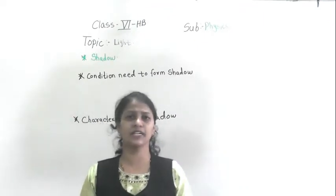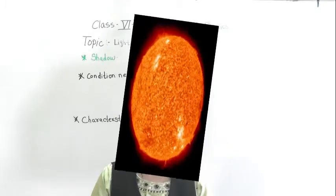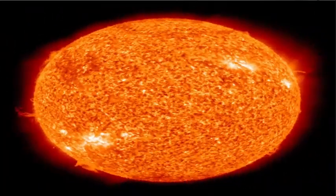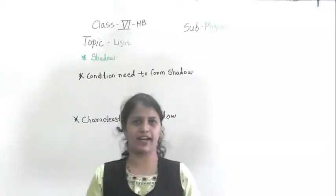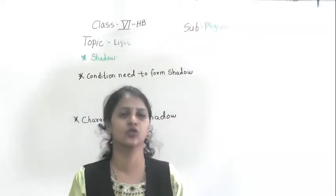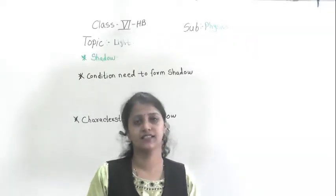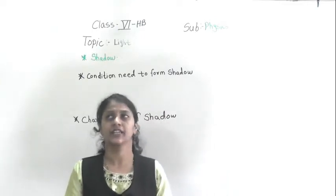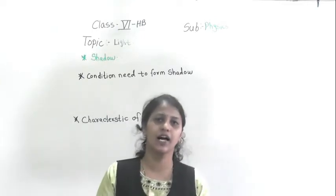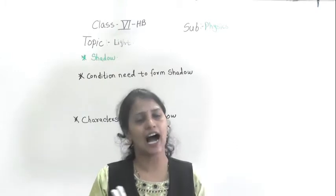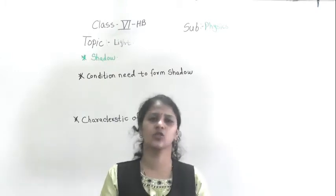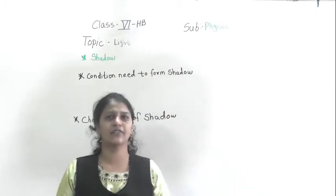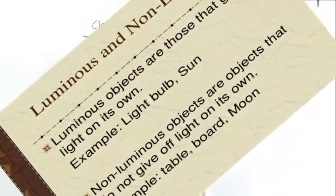Can you tell me what is the prime source of light? The sun is the prime source of light — it is a natural source of light. Stars are also a natural source of light. Then tube light and bulb are examples of artificial sources of light. We also discussed luminous and non-luminous objects.